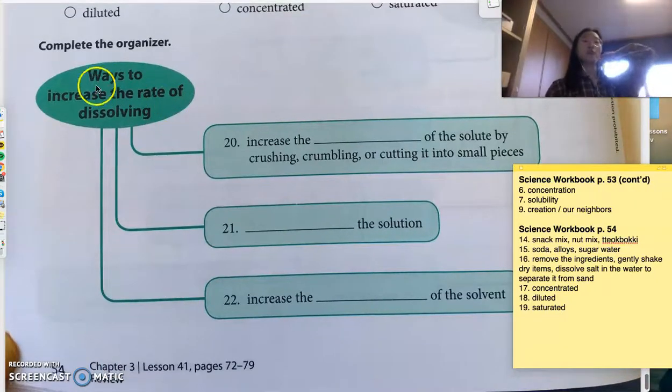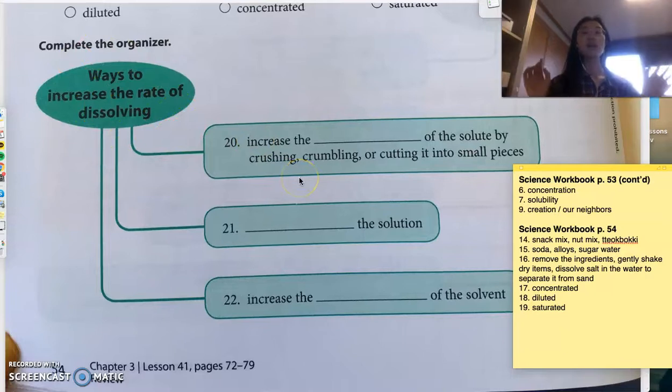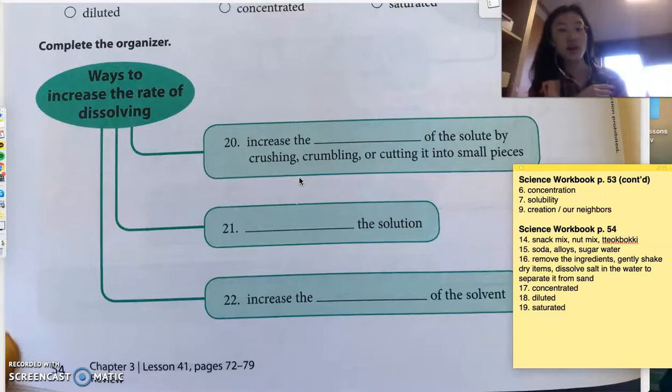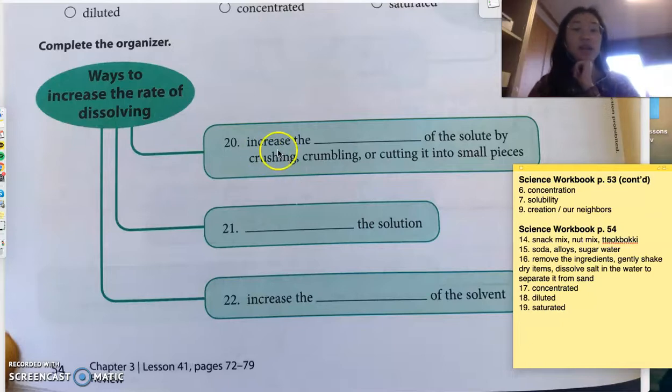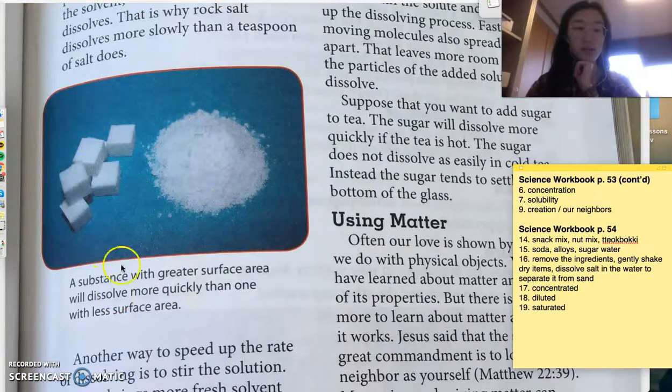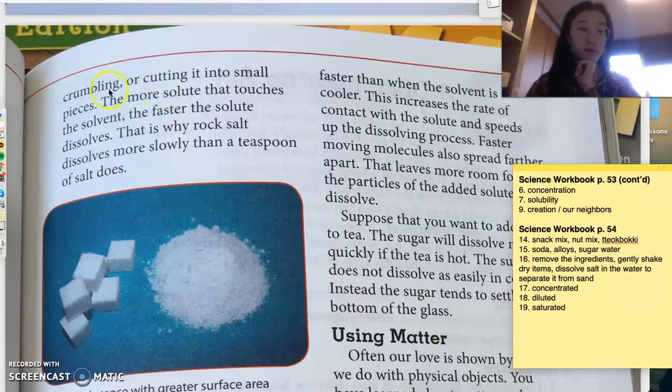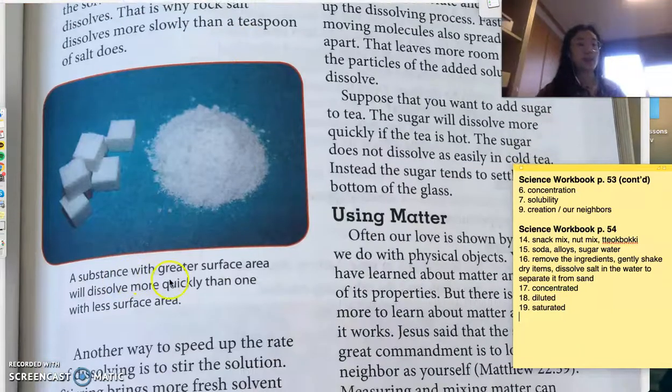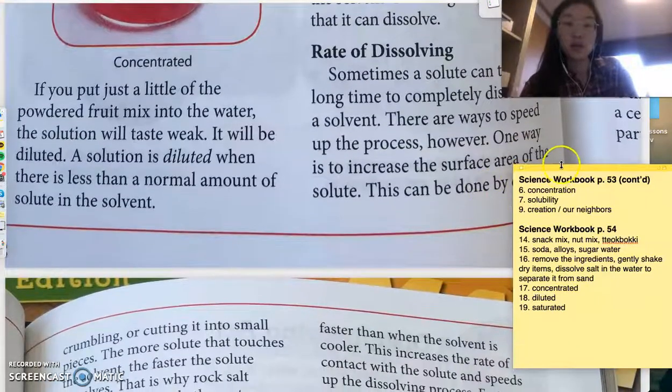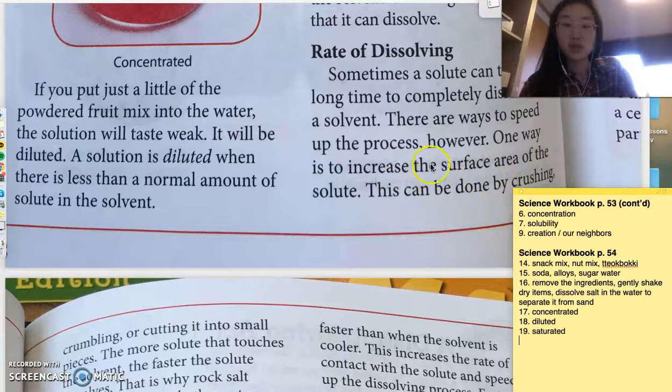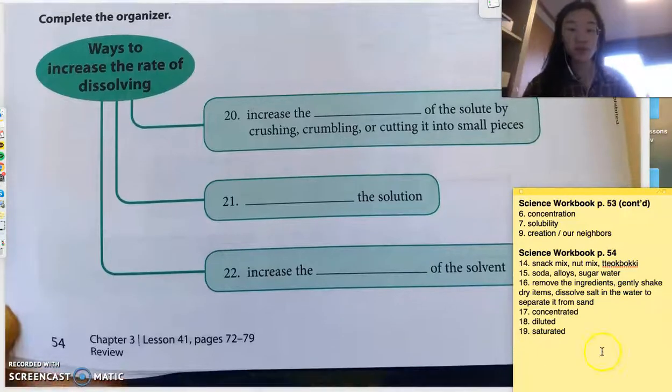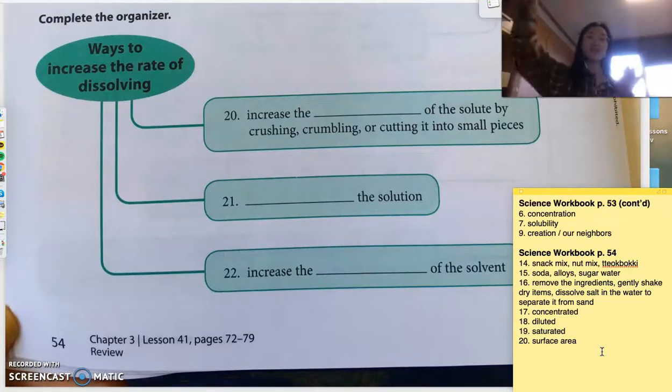All right, last thing. Complete the organizer. Ways to increase the rate of dissolving. So, ways to make the solute dissolve faster. Ways to make the sugar dissolve faster in our cup of water. For example, number 20. Increase the blank of the solute by crushing, crumbling, or cutting it into small pieces. So, this was the example here. Cutting it, crumbling it, or cutting it into small pieces. A substance with greater surface area would dissolve more quickly. So, one way to increase the surface area is to crush it. So, increase the surface area of the solute by crushing it, crumbling it, or cutting it.